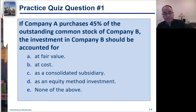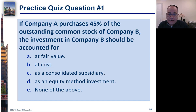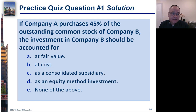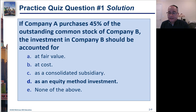Here's a quick question: if Company A purchases 45% of the outstanding common stock of Company B, the investment in Company B should be accounted for as — fair value, cost, consolidated subsidiary, equity method investment, or none of the above? The answer is equity method investment. The key thresholds are: less than 20% is fair value, 20% to 50% is equity method, and more than 50% is consolidated.